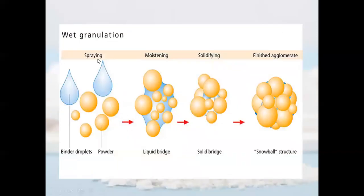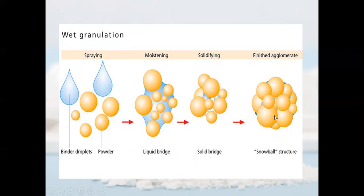During the wet granulation process, binder droplets are added in the granulating liquid to the powder mixture, forming liquid bridges — moistening of the dry powder. Then solid bridge formation takes place due to drying, producing the finished agglomerate, that is, the granule. Granules are then blended with lubricant and compressed into the desired shape and size tablet.